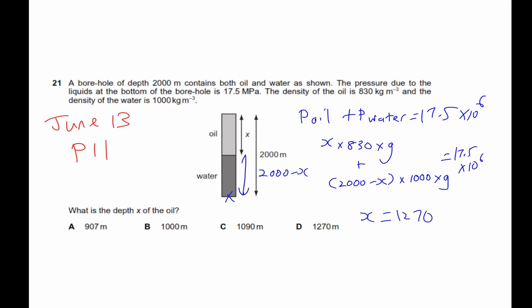In this question, they gave you a borehole—let's say this is a hole that's 2000 meters—contains both water and oil. Pressure due to the liquids at the bottom is 17.5. You notice it said pressure due to the liquids because that's the total pressure here, 17.5 megapascals. They give you the densities of both liquids. What is the depth x?